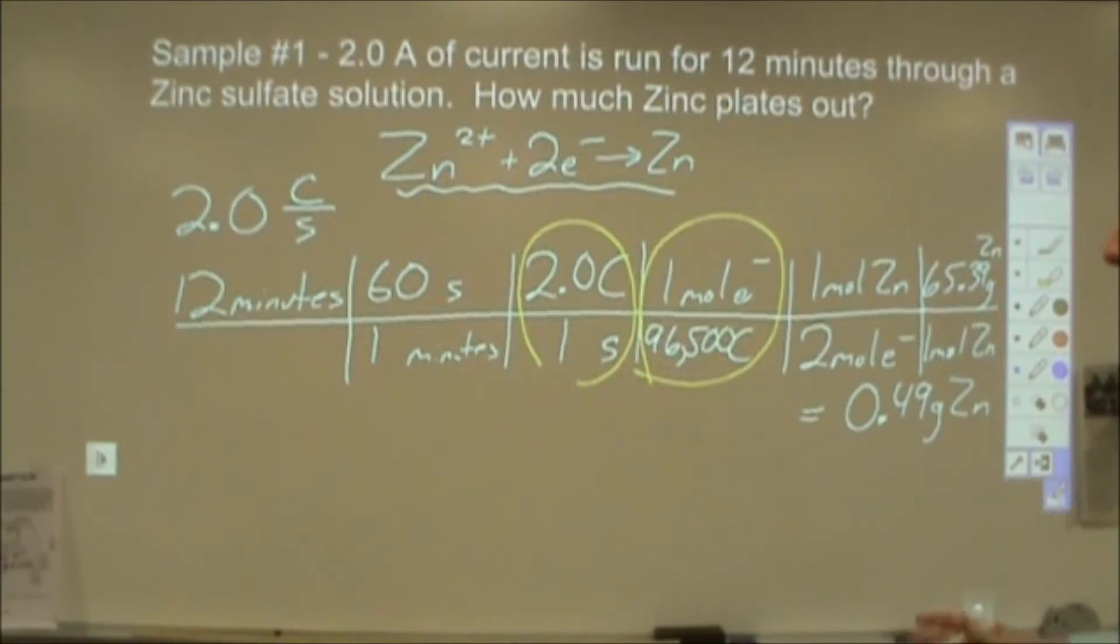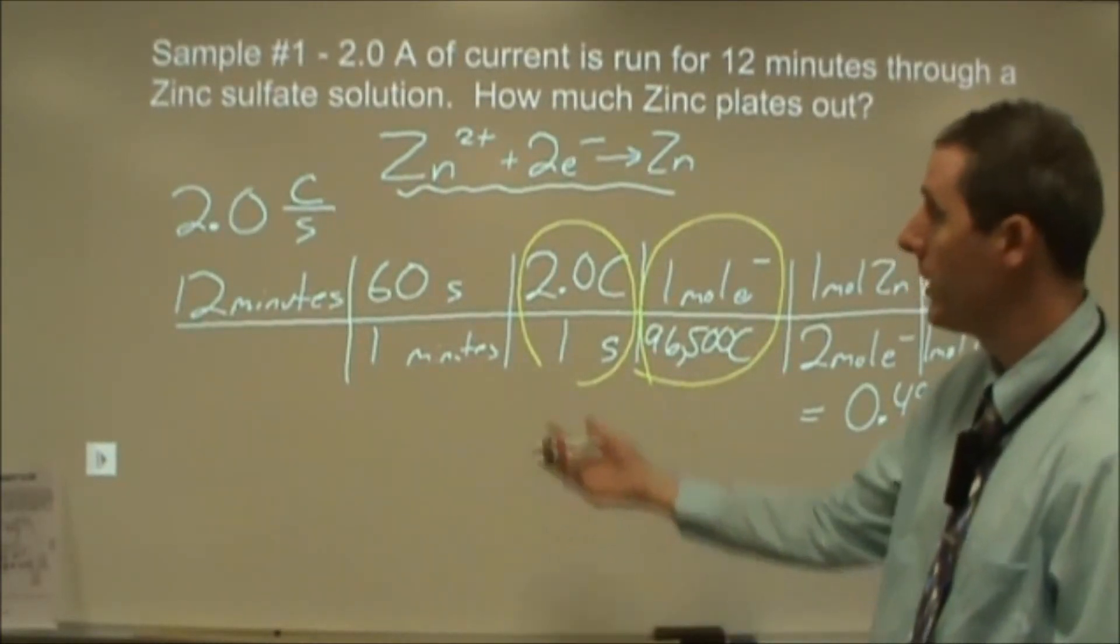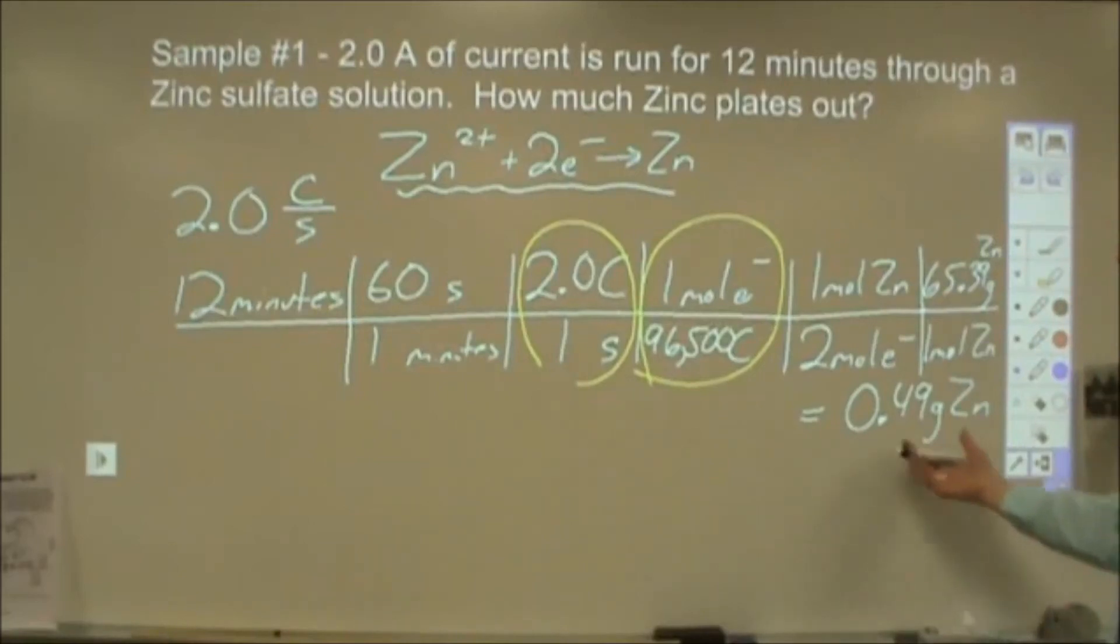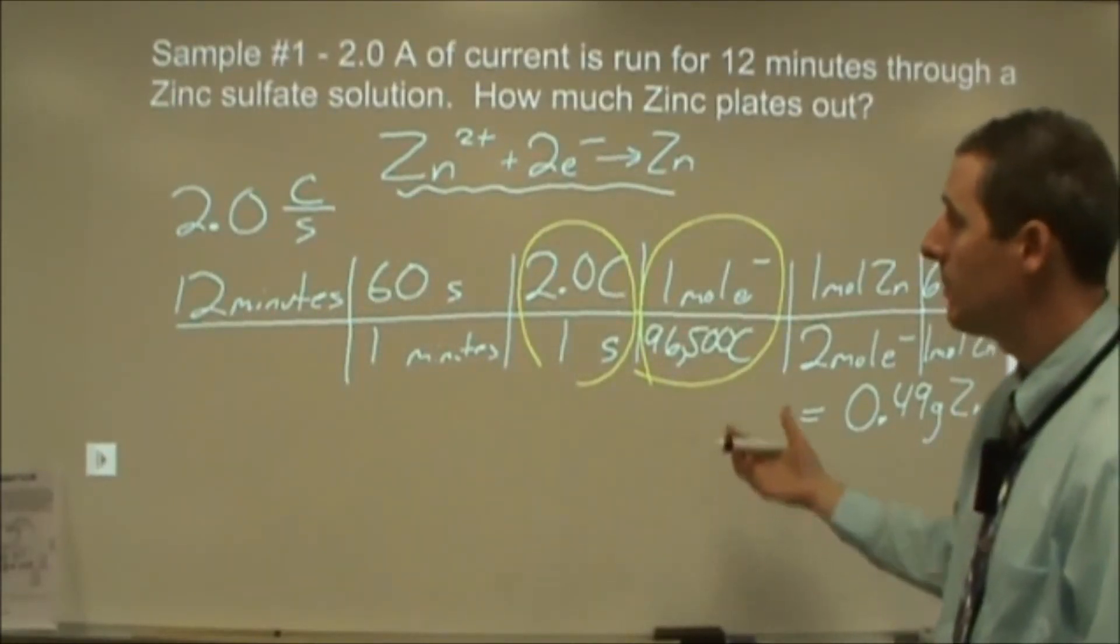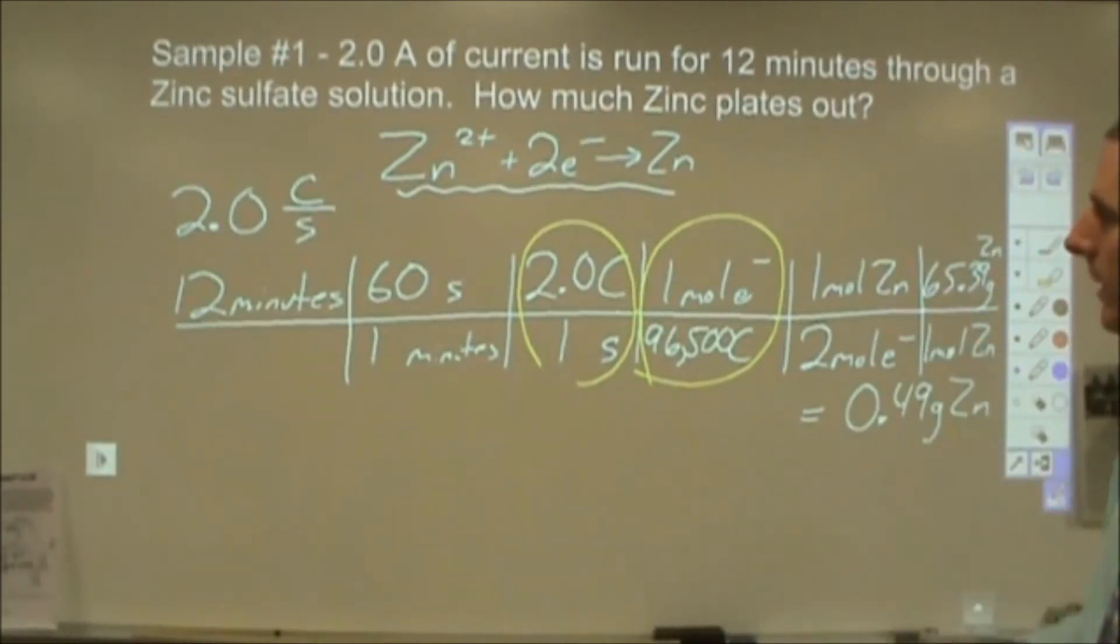Now one of the things you should be aware of is that electrolysis takes a long time to function. So even though you're running this for 12 minutes at a pretty high current, you're not going to get a lot of metal. It takes a long time to plate, which is nice because then you can plate a very thin layer of metal around things when you're doing electrolysis reactions.